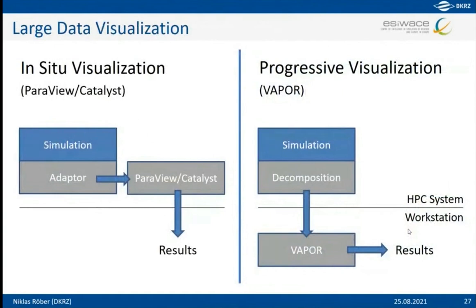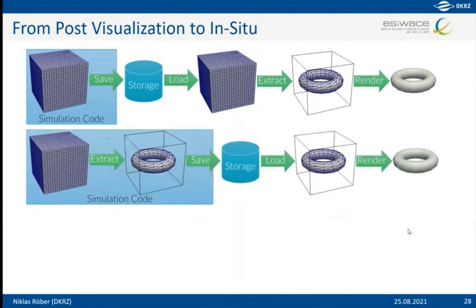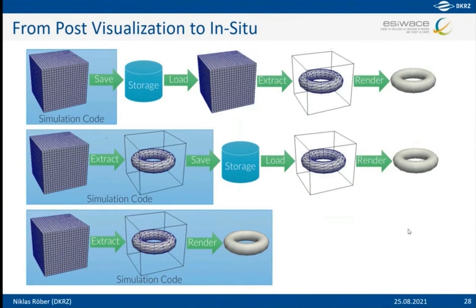For very large data sets you need to think about additional concepts. At DKRZ we consider in-situ visualization and progressive data visualization. In-situ combines simulation and visualization in one, writing out only a small subset of data. The normal pipeline is: simulate, save everything to disk, read it back in, extract data, map it, render it. An intermediate step is performing data reduction during the simulation. The final approach is to do everything during simulation — while data is in main memory, reduce it, extract features, map to geometries and color tables, and write out only the images.